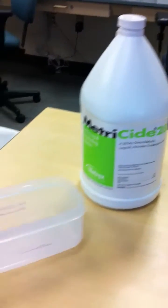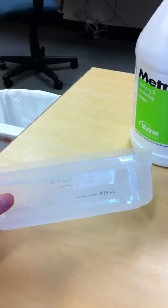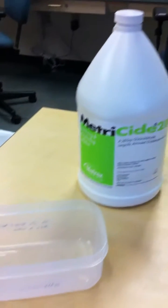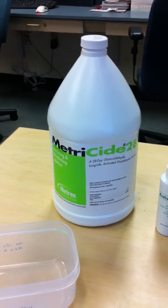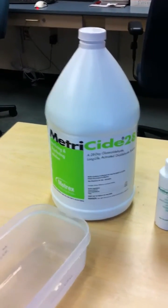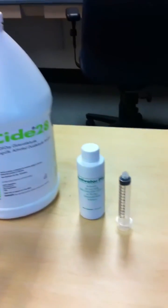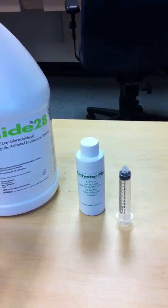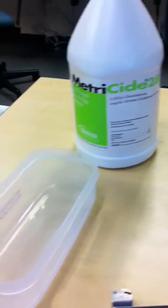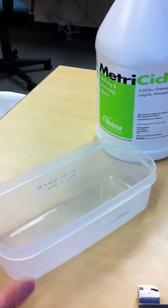Now we need to fill up this container here to the 475 ml mark with the Metricide 28 solution. After we've done that, draw up 18.6 ml of the activator and then add that to the solution inside this Tupperware.